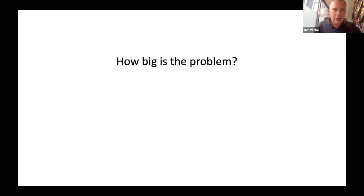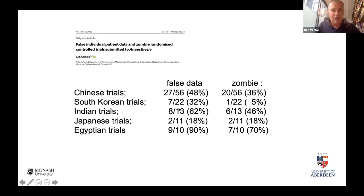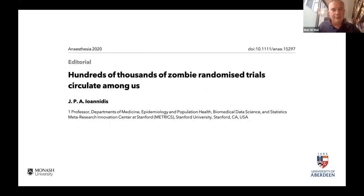About detection: one issue very often mentioned is how big is the problem? Is it not just maybe 1% of papers or less? Unfortunately I don't think that is the case. I think it affects at least 20% of the papers we're seeing in meta-analysis. This is work from John Carlisle, an anesthesiologist who works for the journal Anesthesia — he screens all individual data of RCTs submitted to the journal and qualifies papers in terms of false data and zombie data. In particular regions of the world, it comes up as high as 70% zombie data.